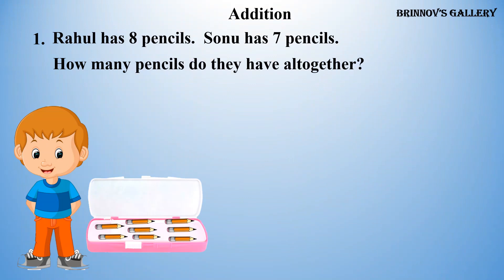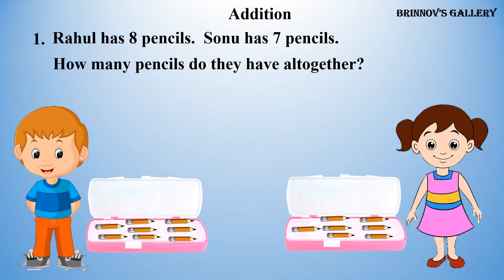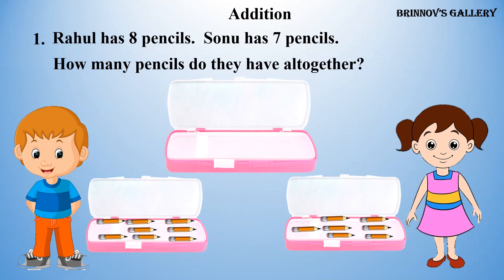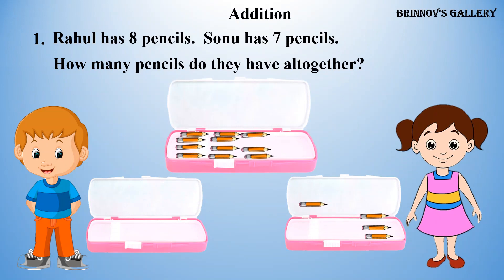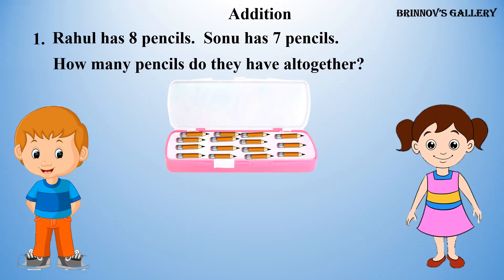Rahul has 8 pencils. Sonu has 7 pencils. How many pencils do they have altogether? 1, 2, 3, 4, 5, 6, 7, 8, 9, 10, 11, 12, 13, 14, 15. They have 15 pencils altogether.